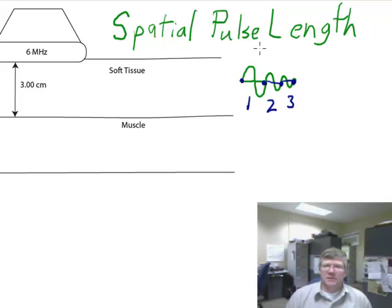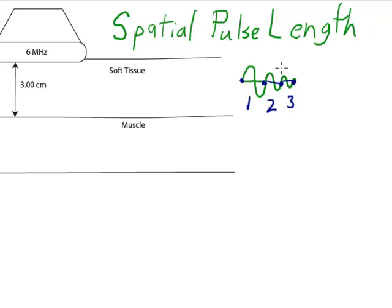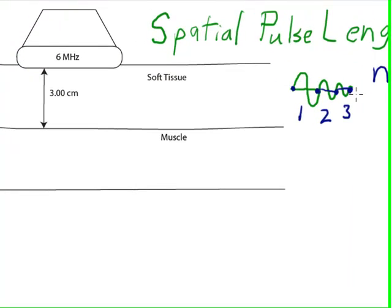Since it has three complete wavelengths in the pulse, we're going to say the number of wavelengths n equals three in this case. This is actually the factor that determines the resolution of the ultrasound.